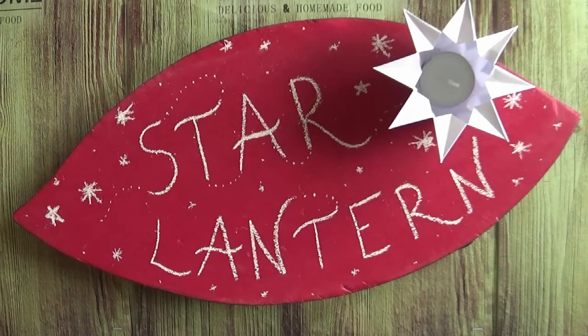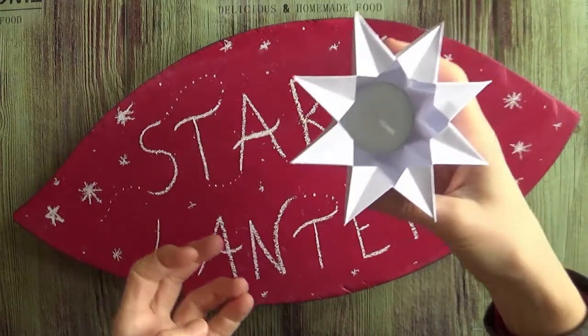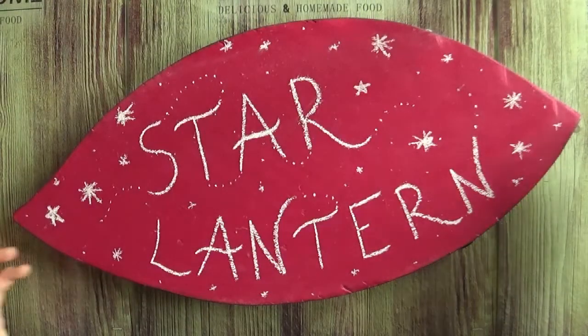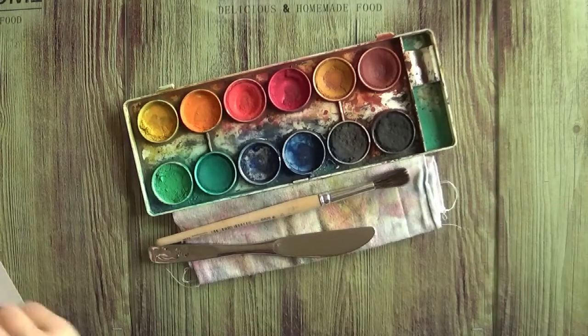Hello! So today let's make a Waldorf style star lantern like this one. For this what you basically need is just a square piece of paper and some scissors and that's it.